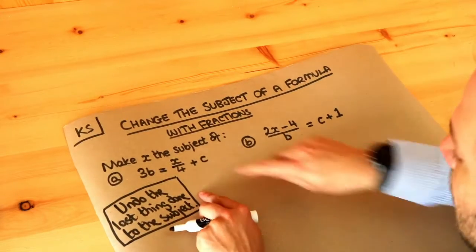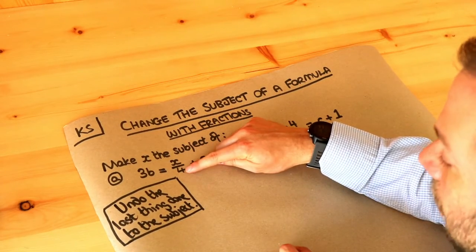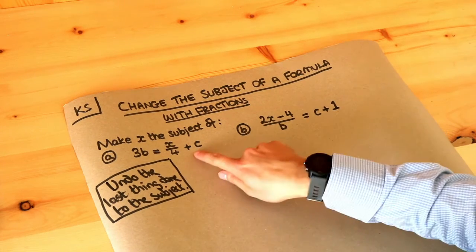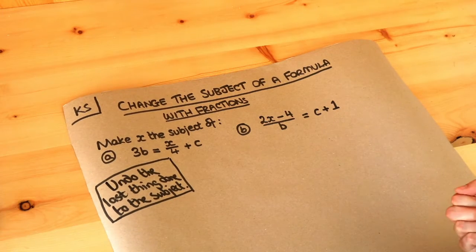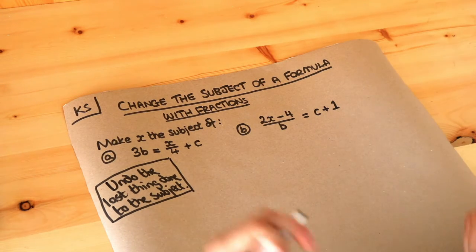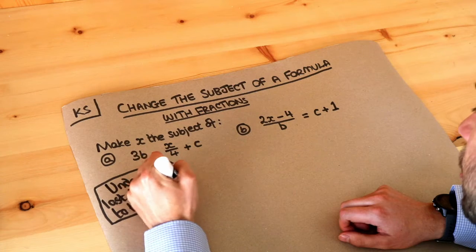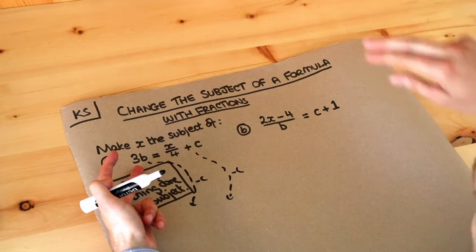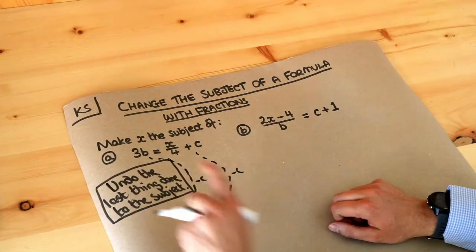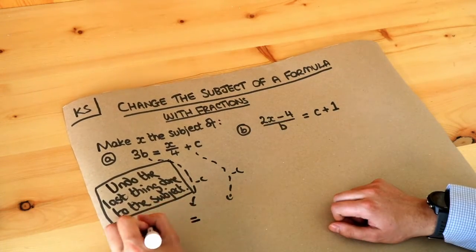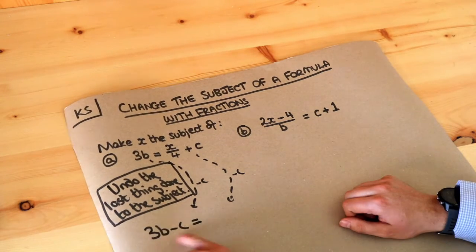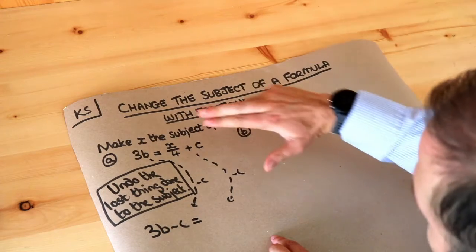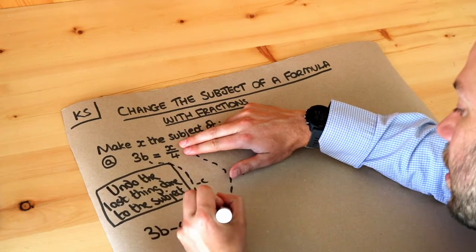Let's think about what's happening to x. x has been divided by 4, that's what over 4 means, and then we added c to it. So what was the last thing we did? The last thing we did was add the c, so we undo that by doing the opposite. We subtract c from both sides of the equation. So 3b minus c gives us 3b minus c on the left. Subtracting c from the right hand side just gets rid of that plus c, so we're left with x over 4.